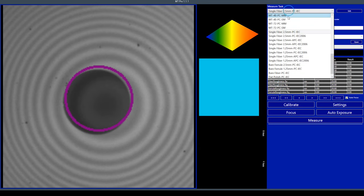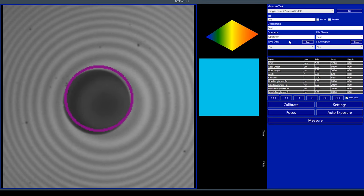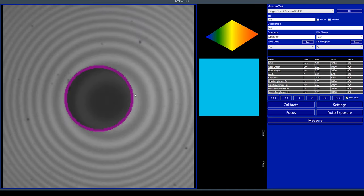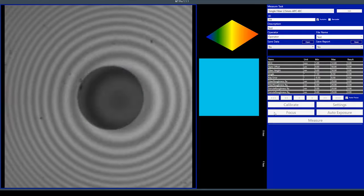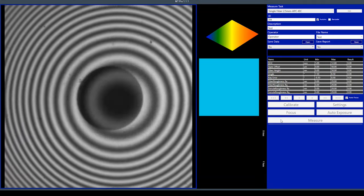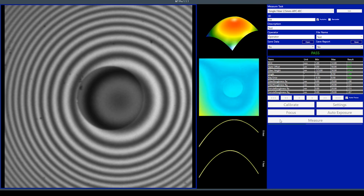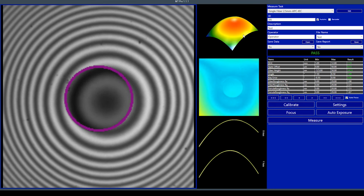While inspecting the patch cord, change the test to the APC option. Select Focus to obtain an Auto Focus. Select Measure and the results will be ready in seconds.